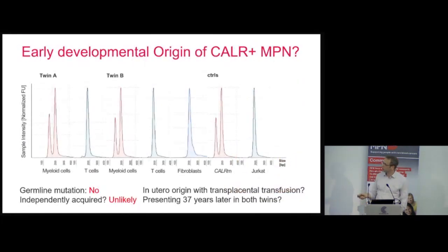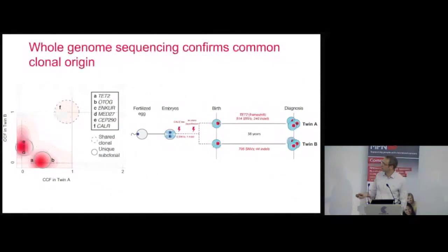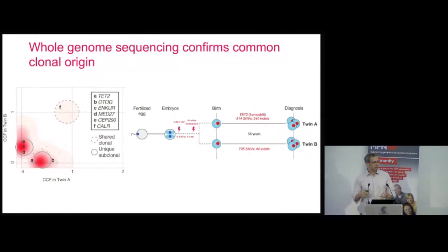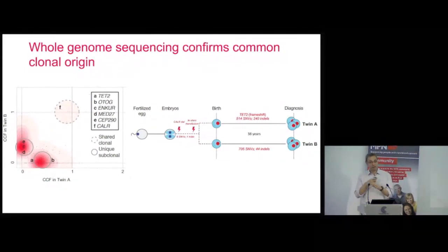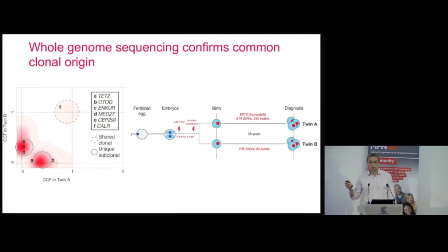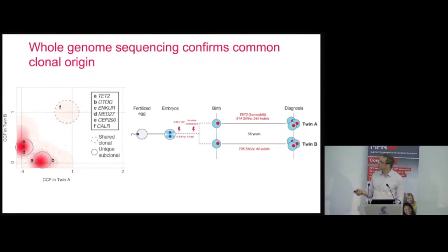We had to work out why this was happening. When twins are in utero they share a placenta and therefore share a blood supply, so blood cells are essentially transplanted between them. What probably happened — thinking about how these mutations can occur very early in life, even in utero — is that one twin got the mutation and it was transferred to the other. This is another way of studying how these diseases develop over a very prolonged period of time.